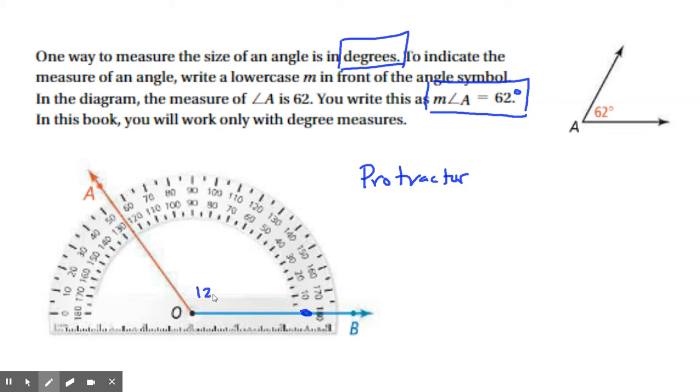So, this angle is a 125 degree angle, this obtuse angle. So, over here, the measure of angle AOB equals 125 degrees. That's how I'd write it.